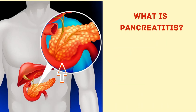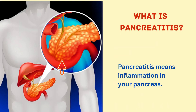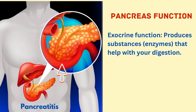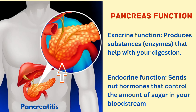What is pancreatitis? Pancreatitis means inflammation in your pancreas. The pancreas performs two main functions: exocrine function and endocrine function. Exocrine function produces substances — enzymes — that help with your digestion. Endocrine function sends out hormones that control the amount of sugar in your bloodstream.